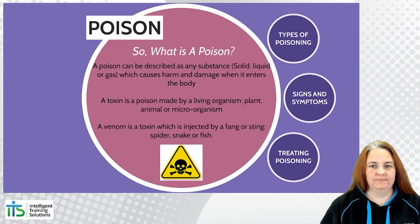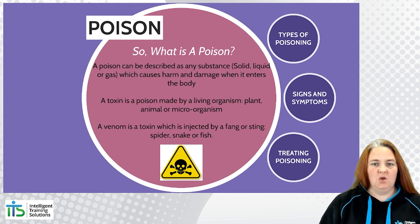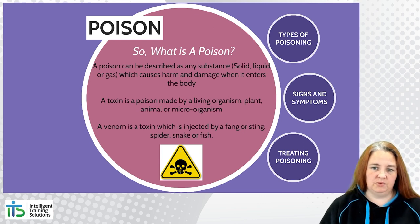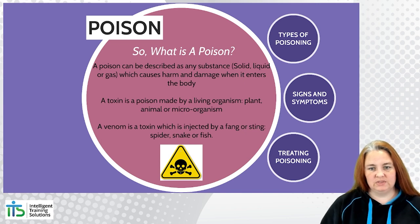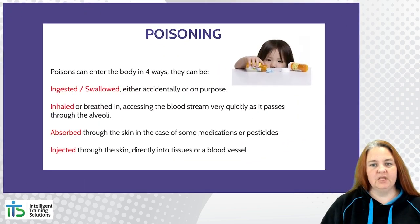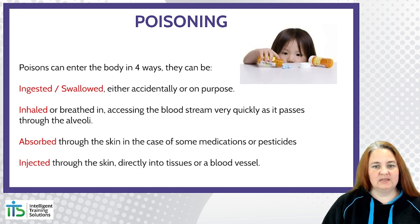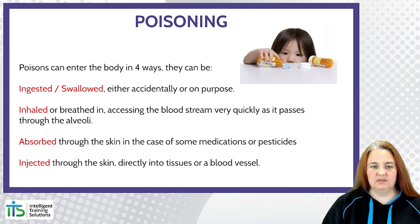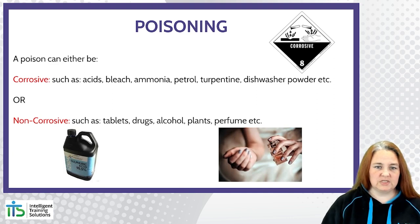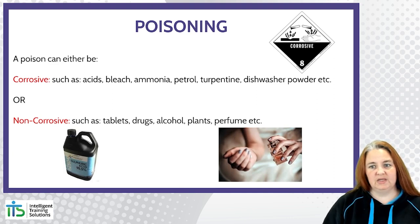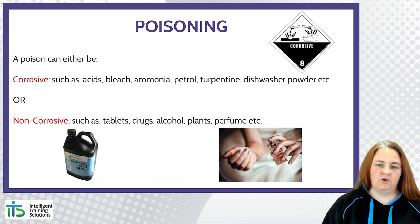A poison can be described as any substance — solid, liquid or gas — which causes harm and damage when it enters the body. A toxin is a poison made by a living organism: a plant, animal or microorganism. A venom is a toxin which is injected by fang or sting — spider, snake or fish. Poisons can enter the body in four ways: ingested or swallowed either accidentally or on purpose; inhaled or breathed in, accessing the bloodstream quickly through the alveoli; absorbed through the skin in the case of some medications or pesticides; or injected through the skin directly into tissues or a blood vessel. Poisons can be corrosive — such as acids, bleach, ammonia, petrol, turpentine, dishwashing powder — or non-corrosive, such as tablets, drugs, alcohol, plants or perfume.